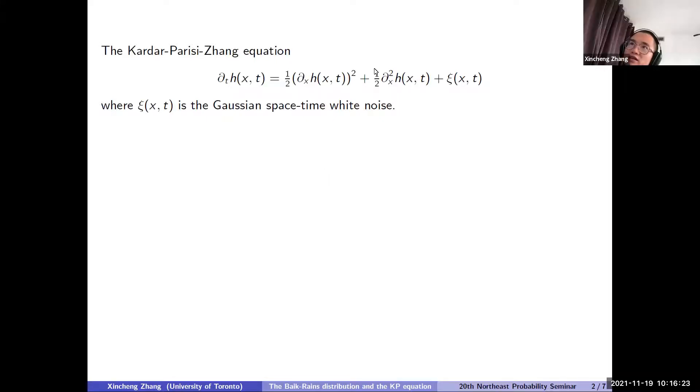So let's start with the KPZ equation. This is the famous SPDE, which was introduced by Kardar, Parisi, Zhang to model the random growth of some height function. The randomness comes from this ξ(x,t) term. The ξ(x,t) is the Gaussian space-time white noise. And the KPZ equation stays in the KPZ universality class, as the name suggests. So for models in the KPZ universality class, there are two features.